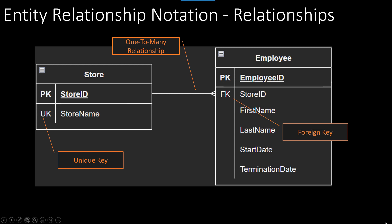With the FK we have the foreign key, and we also denote another constraint as a unique key. This means not only will an ID uniquely identify a row in the store table, but each store must also be uniquely named — so you can't have two stores both called 'Eastside Pizza.' You could have 'Eastside Chicago Pizza' and 'Eastside Naperville Pizza,' but they can't share the same name. That wraps up our quick lesson on Entity Relationship Diagrams.